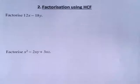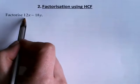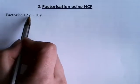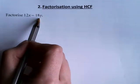We need to factorize by using the highest common factor. When we look at the two terms in this expression, 12x minus 18y, we don't have any like terms, but we have 12 and 18, which are numbers, and we can find the highest common factor between the two numbers.